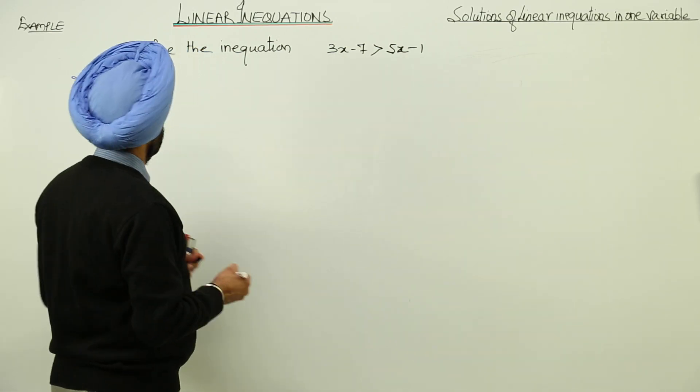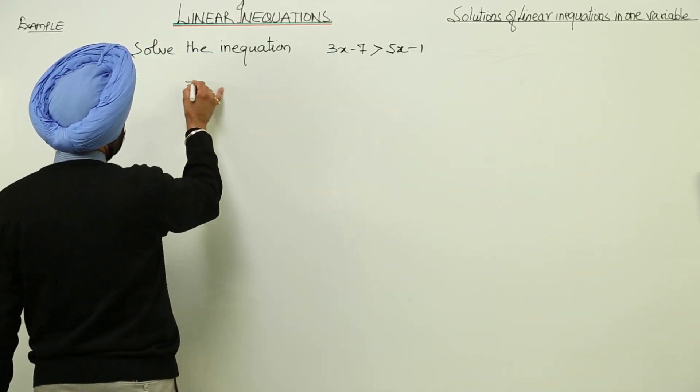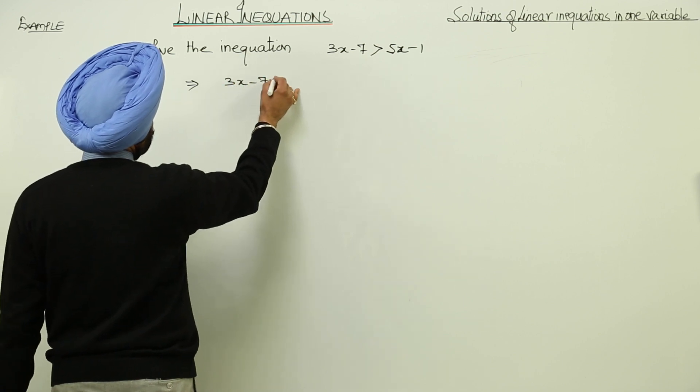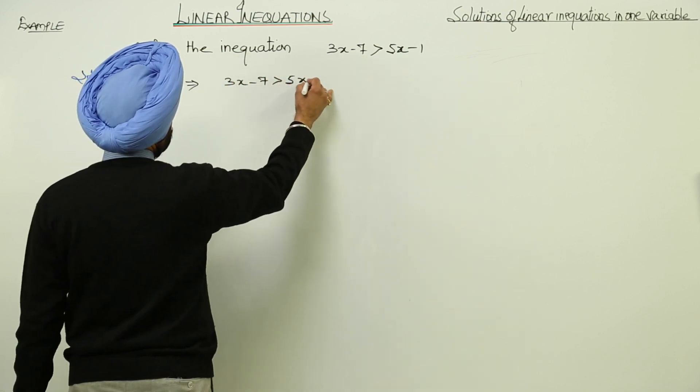Next example. Now just look again how I am writing this. It is 3x - 7 > 5x - 1.